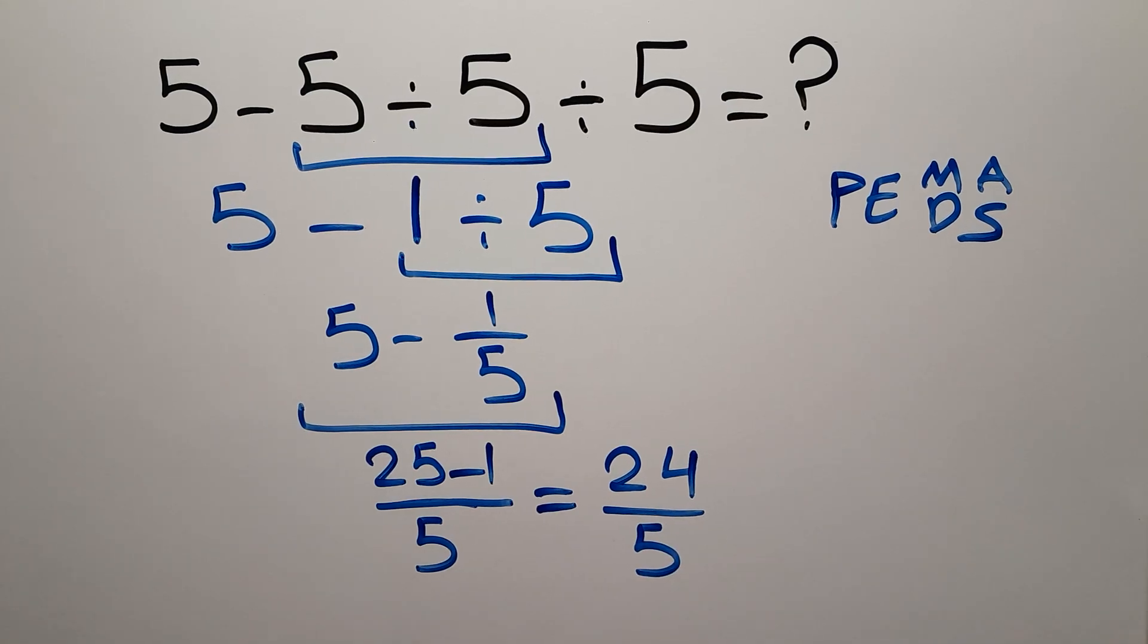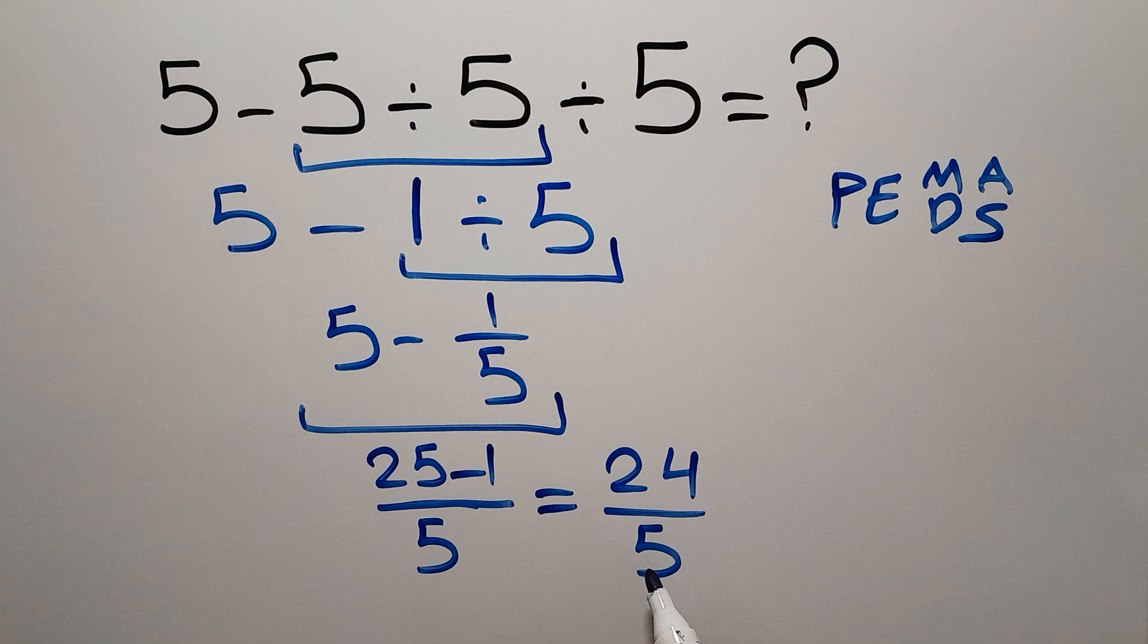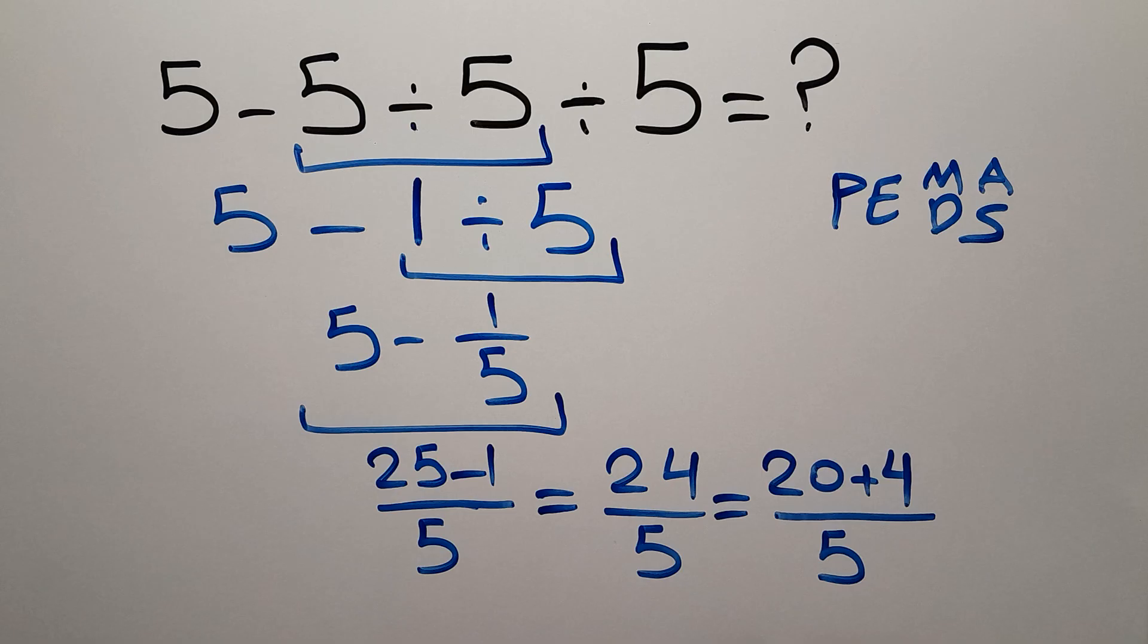Now, let's convert this improper fraction to a mixed number. 24 over 5. We can write 20 plus 4 over 5. 20 divided by 5 gives us 4. So 4 and 4 over 5.